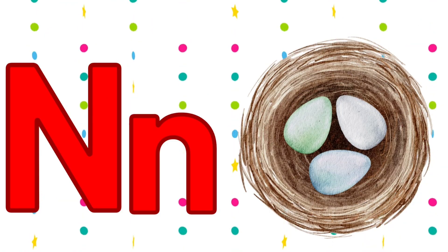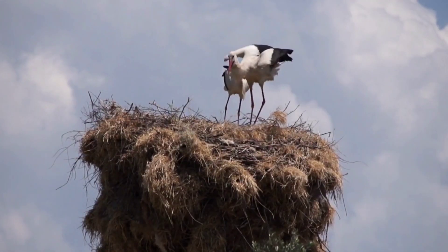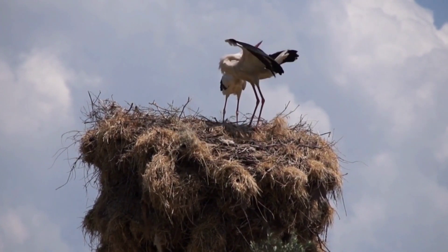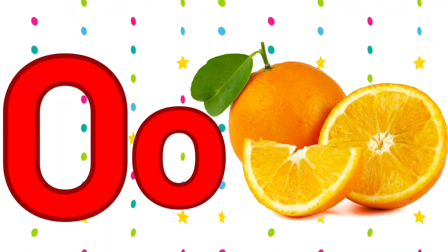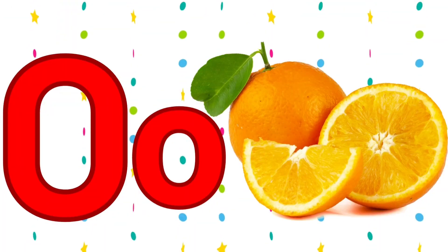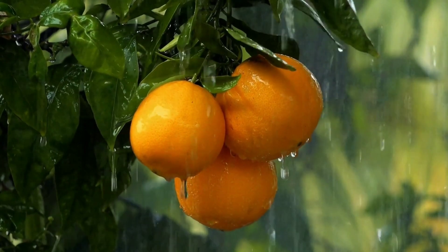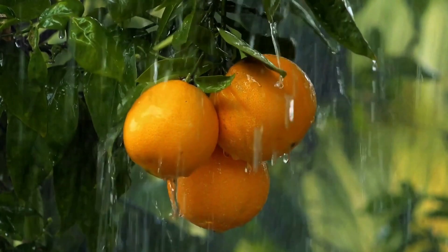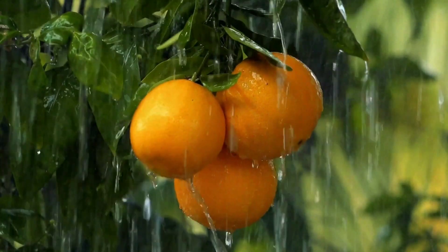N is for nest. Its spelling is N-E-S-T. Next. O. O is for orange. Orange means walta. Its spelling is O-R-A-N-G-E. Orange.